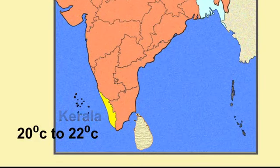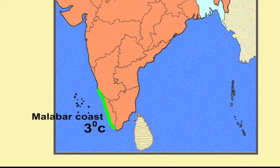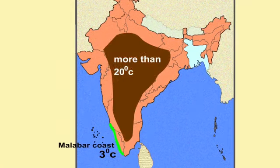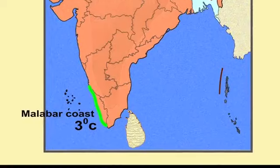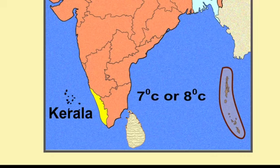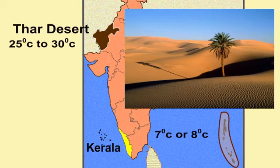The annual range of temperature — the difference between the hottest and coldest month — is just 3 degrees Celsius along the Malabar coast, due to the moderating influence of the sea. Whereas it is more than 20 degrees Celsius in the interiors, because they are away from the sea. The difference between day and night temperature in the Andaman and Nicobar Islands and Kerala is hardly 7 or 8 degrees Celsius, whereas in the Thar Desert it is between 25 to 30 degrees Celsius.